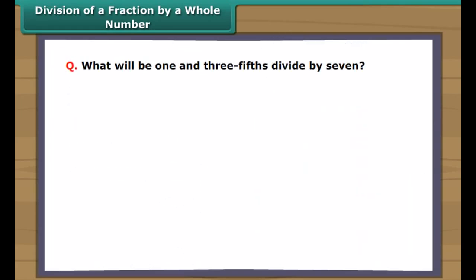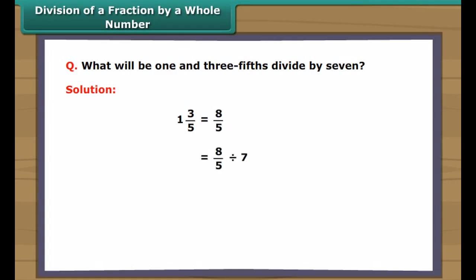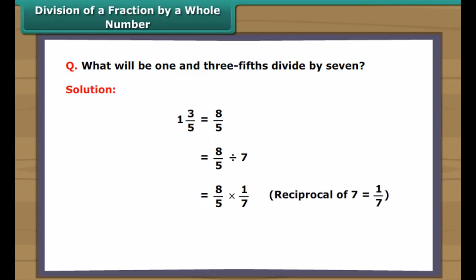What is one and three-fifths divided by 7? First, convert the mixed fraction to an improper fraction: we get eight-fifths divided by 7. This equals eight-fifths multiplied by one-seventh, since one-seventh is the reciprocal of 7, giving eight-thirty-fifths as the answer.